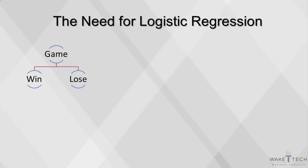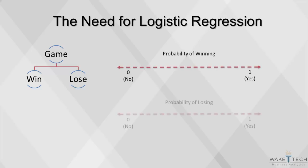When the outcome variable is categorical, such as our game example, it does not follow a normal distribution. The outcome variable is a probability, measured between 0 and 1. The estimates you make should be numbers in that range. A linear model cannot be applied; we need a nonlinear function.